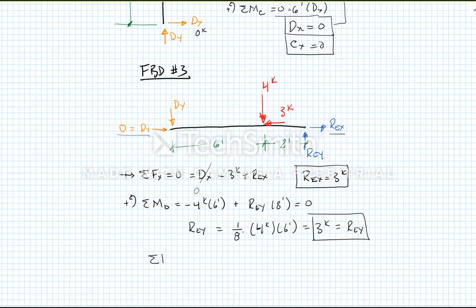The last equation of equilibrium down here is the sum of the forces in the y direction have to equal zero. We'll do up being positive. And we get minus DY minus four kips plus REY. So solving that for DY, I get DY equals minus four kips plus three kips is equal to minus one kip equals DY.